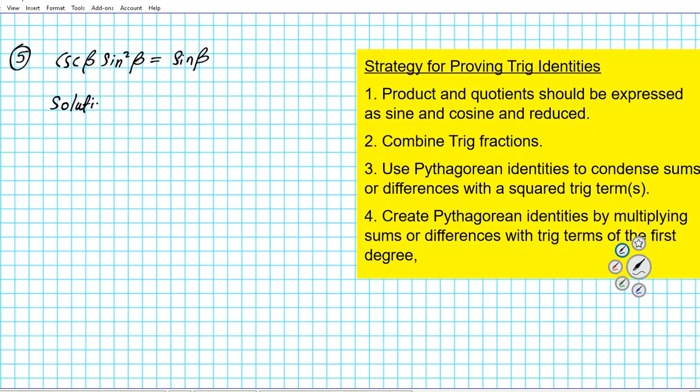If you take a look at the yellow box here, you can see a list that contains the steps for the strategies that we're going to be using to carry out our trig identity proofs. So the problem we're proving, we have cosecant beta times sine square beta on the left. This is a product of two trig functions, and on the right side we have sine beta. Now if you take a look at one, two, three, four on our strategy for proving trig identities.